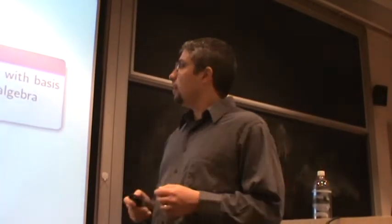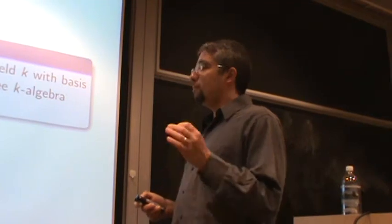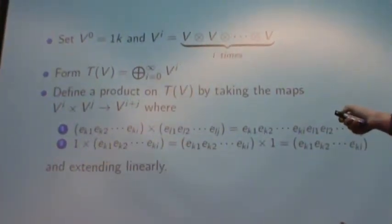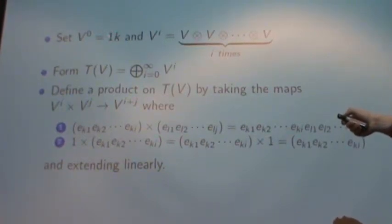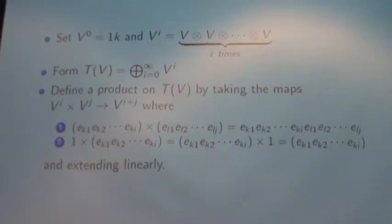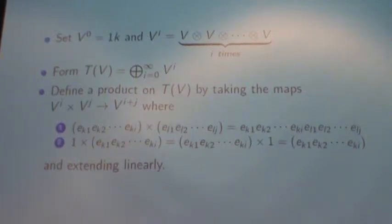Now we want some algebra definitions, and we're going to start off with the tensor algebra. Suppose we have a finite dimensional vector space with basis E1 through En. The tensor algebra is just going to be the free k-algebra generated by those basis elements. We take V^0 to be a copy of our field with basis element 1 (the identity). For V^i, we take V tensored with itself i times — think of that as all linear combinations of words in our basis elements of length i. Then we take the direct sum of all V^i to form the vector space T(V).